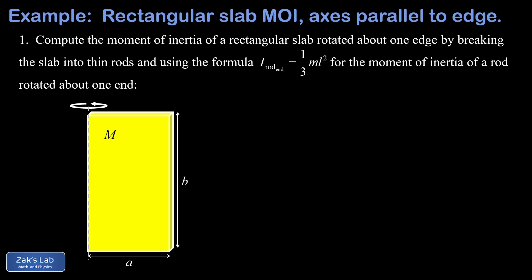The methods to solve these are very closely related. For the first problem, where we're rotating the slab about one edge, we can use the previous result for the moment of inertia of a rod rotating about one end. The idea is to slice our rectangular slab into a bunch of thin rods, use that formula for each rod's contribution, and then use an integral to add them all up to find the total moment of inertia of the rectangular slab.